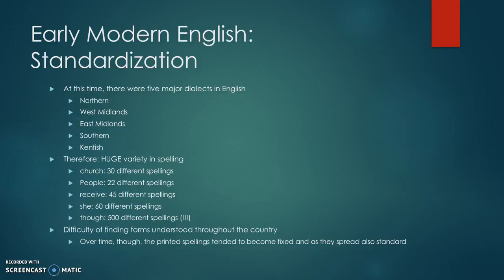So it was difficult when you printed books to find forms that could be understood throughout the country. Over time, though, the spellings that were printed tended to become fixed, and as they became fixed they spread, and so they became the standard. That's what this process of standardization is about — finding a fixed, certain way of spelling words.